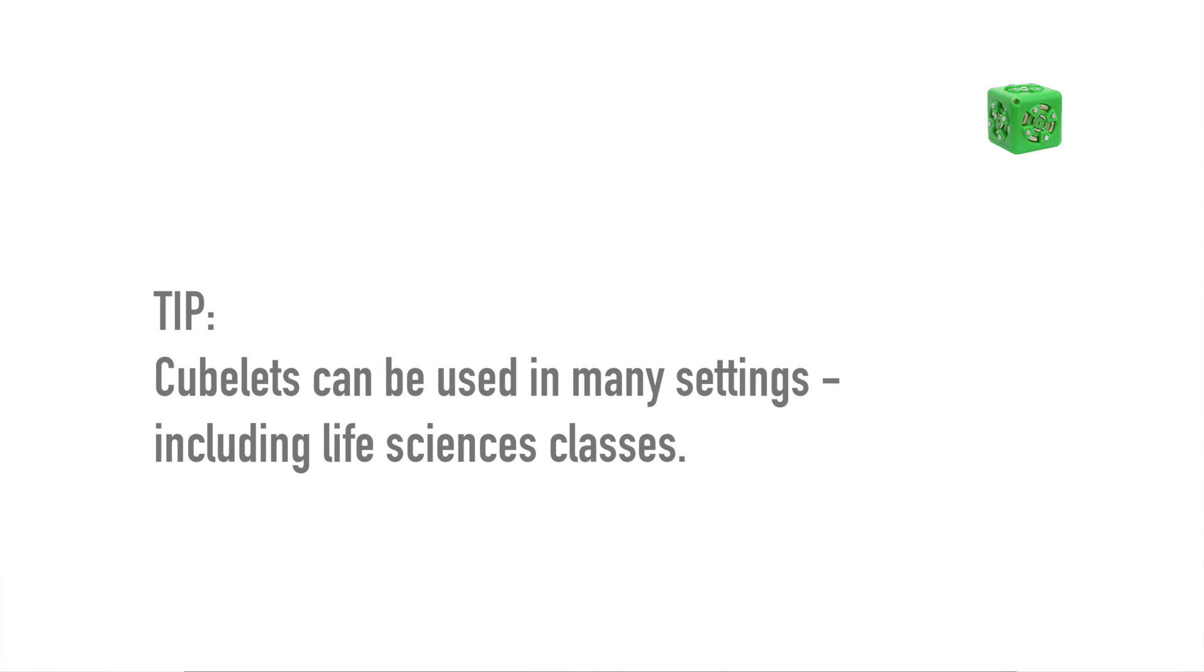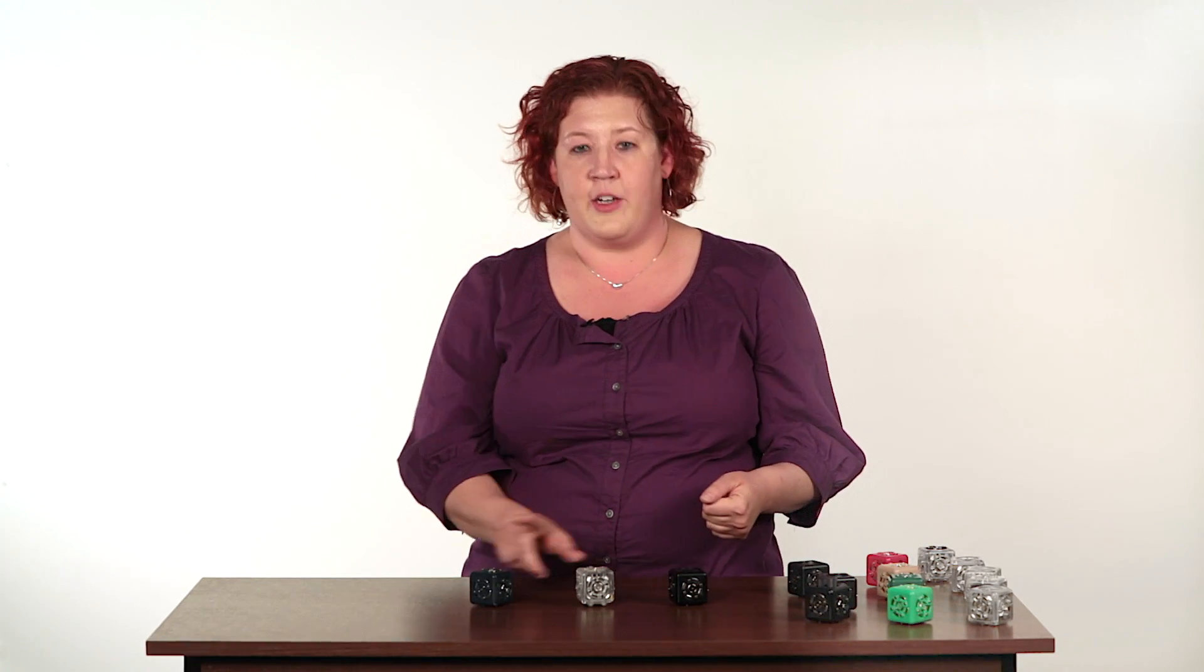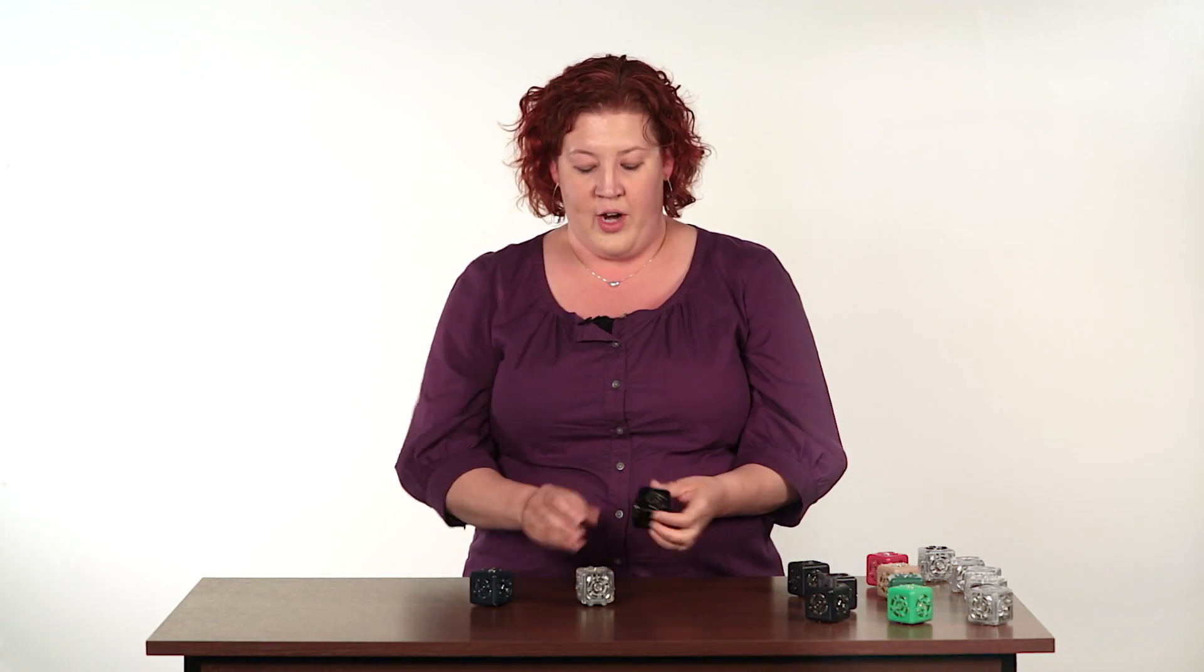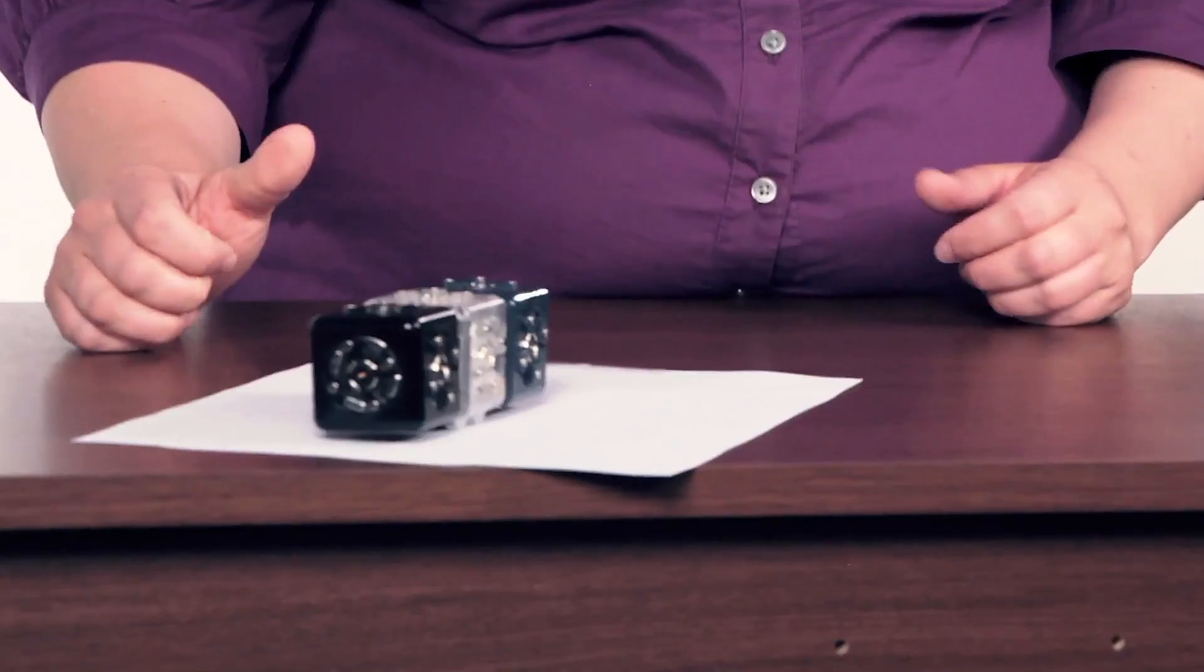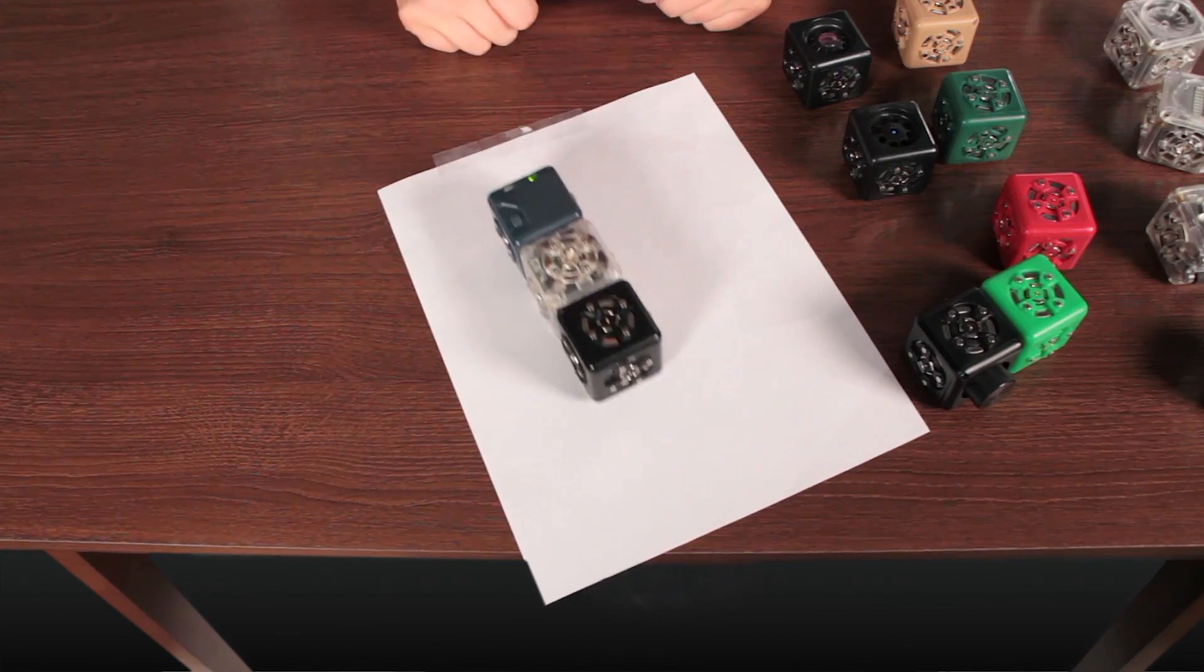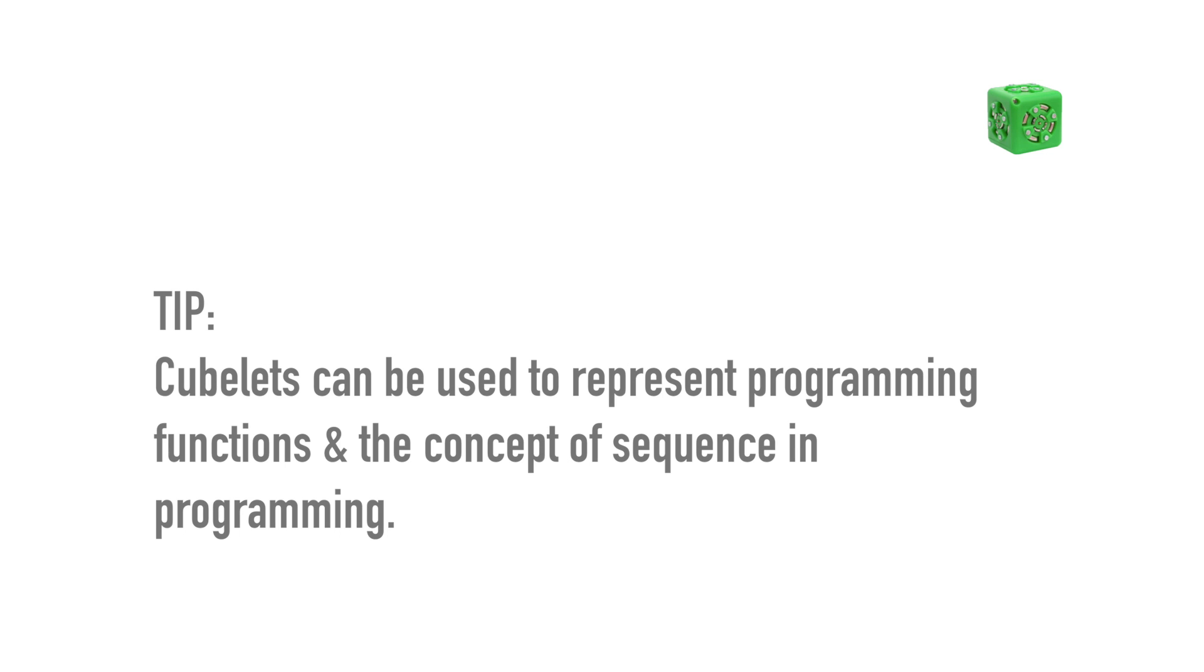Our life science lesson plans encourage students to keep rebuilding these moving robots to emulate living organisms and their responses. With these same three simple cubelet functions, our distance, our drive, and our battery, you can challenge students to build a cliffhanger robot that will not drive off the edge of a table. This is a powerful example of using cubelets to represent programming functions and the concept of sequence in programming so it's included in our computational thinking unit.